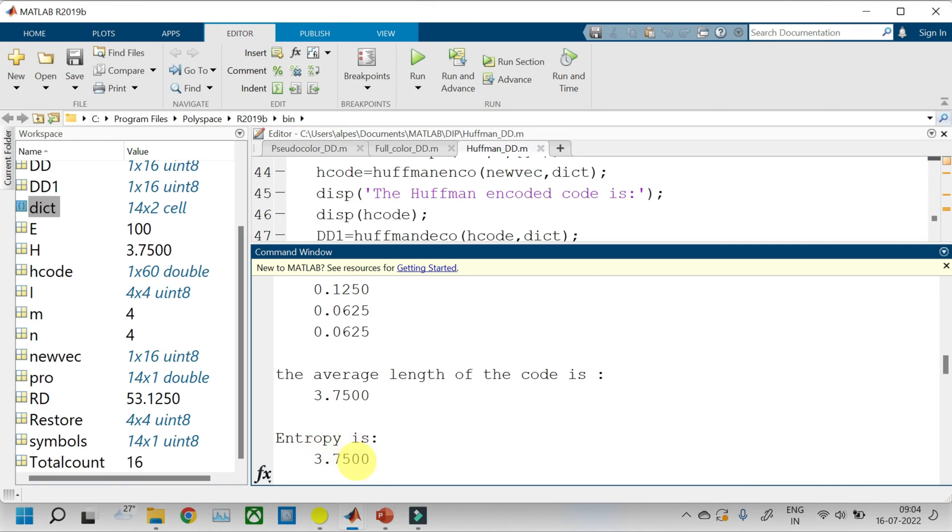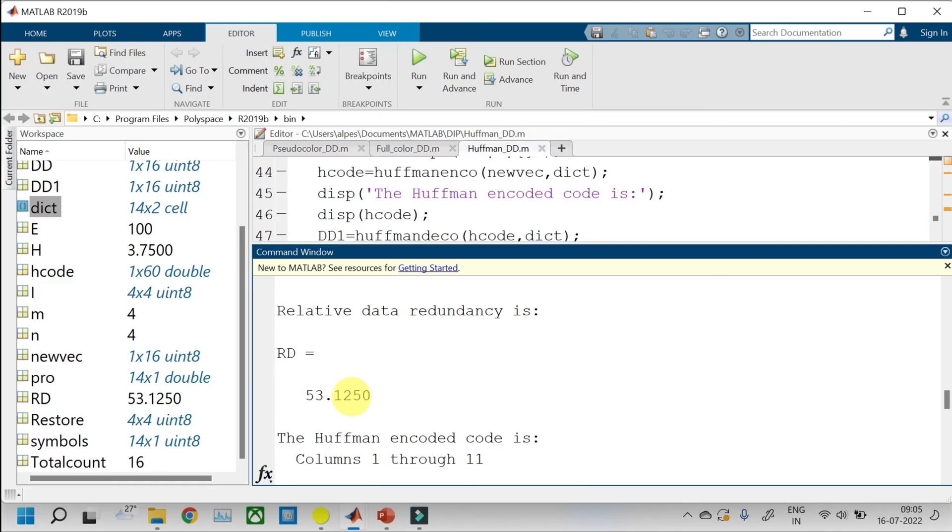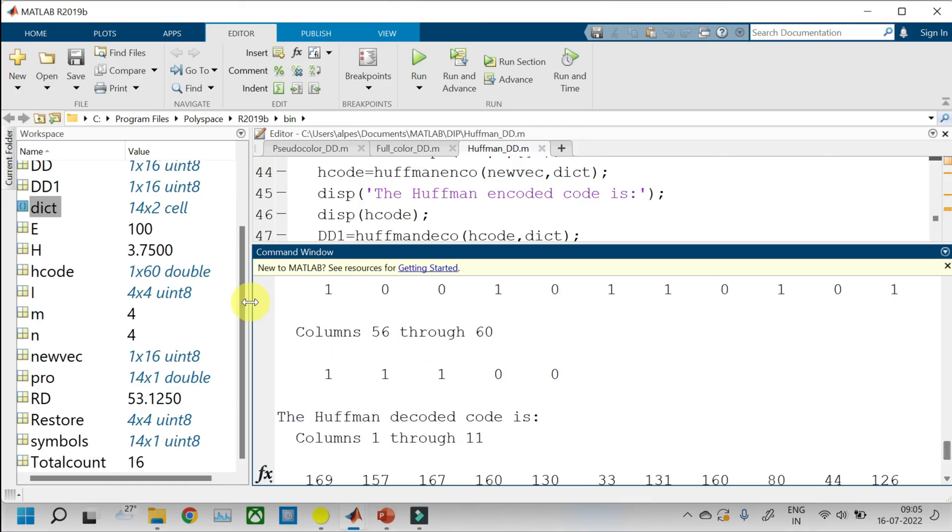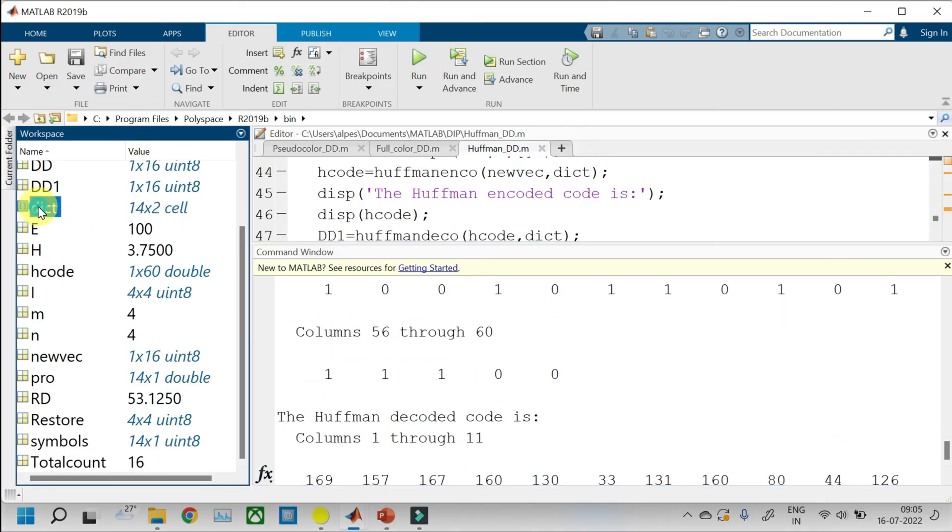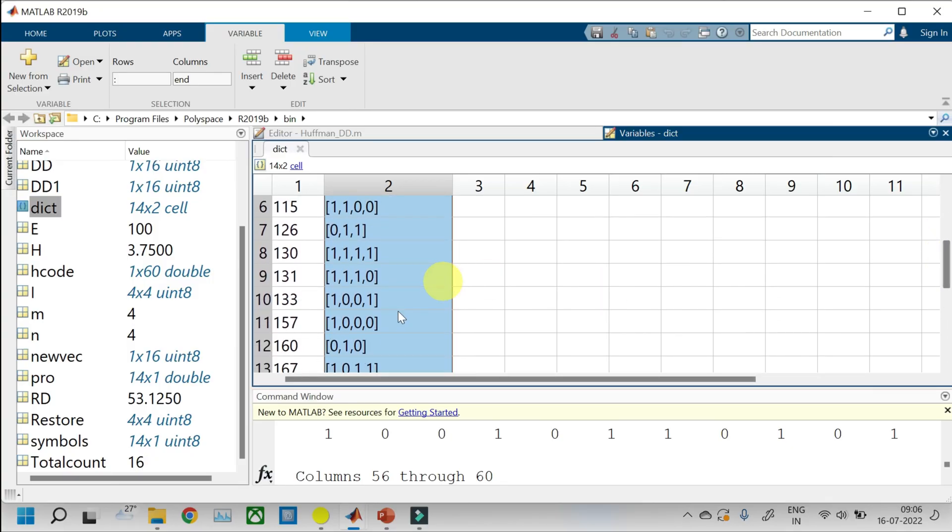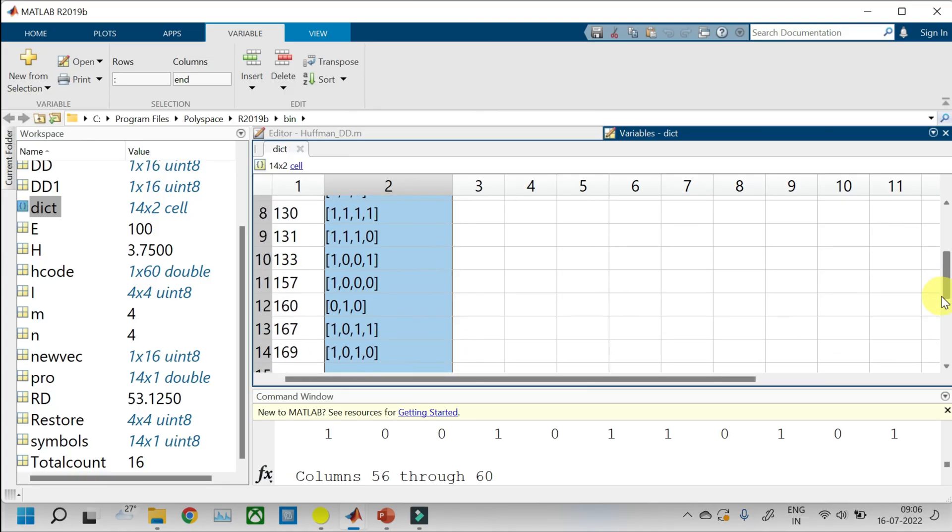The average length of the code is 3.75 for this example. And entropy is also 3.75 for this example. That means that the code is 100% efficient. So, efficiency is 100%. Compression ratio comes out to be 2.133. And relative data redundancy is 53.12%. That means 53.12% data is redundant. The Huffman encoded code is shown here for the pixel values 16 x 16. And you can see that code in the dictionary. If we see the dictionary, these are the different code words that are assigned to different intensity values.